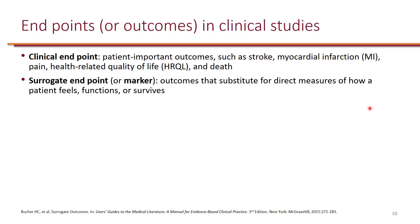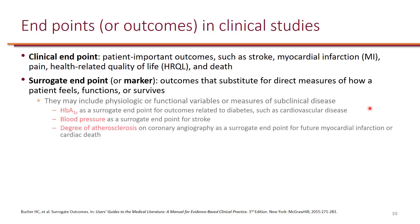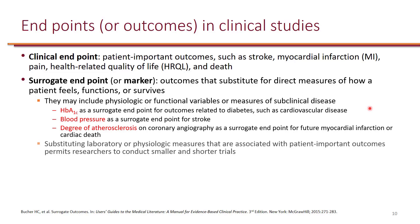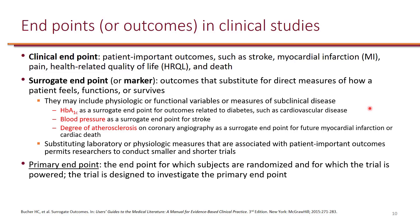There are also surrogate endpoints or markers that are actually substitutes for those clinical endpoints. Some examples include A1C, blood pressure, and degree of atherosclerosis. Although clinical endpoints are preferred to surrogate endpoints, substituting surrogate endpoints for clinical actually permits researchers to conduct smaller and shorter trials.